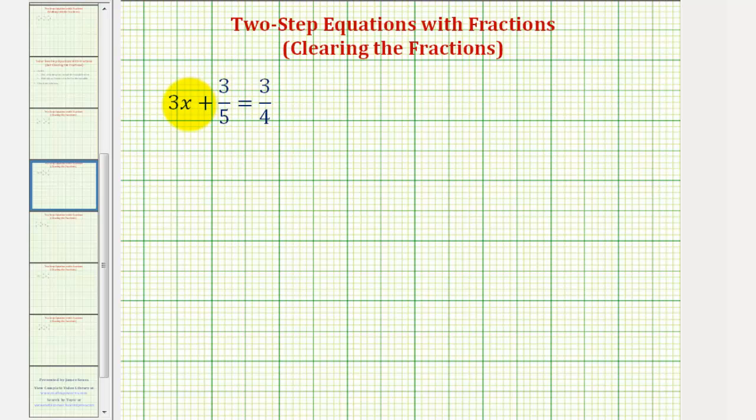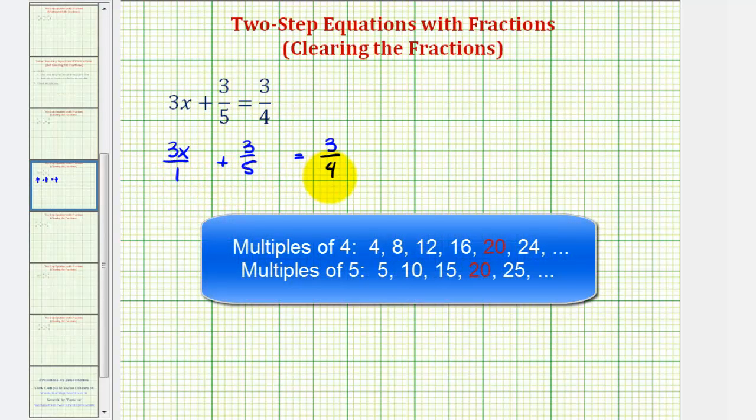Looking at our example, notice that 3x is not in fraction form, so I'm going to rewrite this as 3x over 1 plus 3/5 equals 3/4. We want to obtain the least common denominator of 1, 5, and 4, which would be the least common multiple of 5 and 4, which is 20.